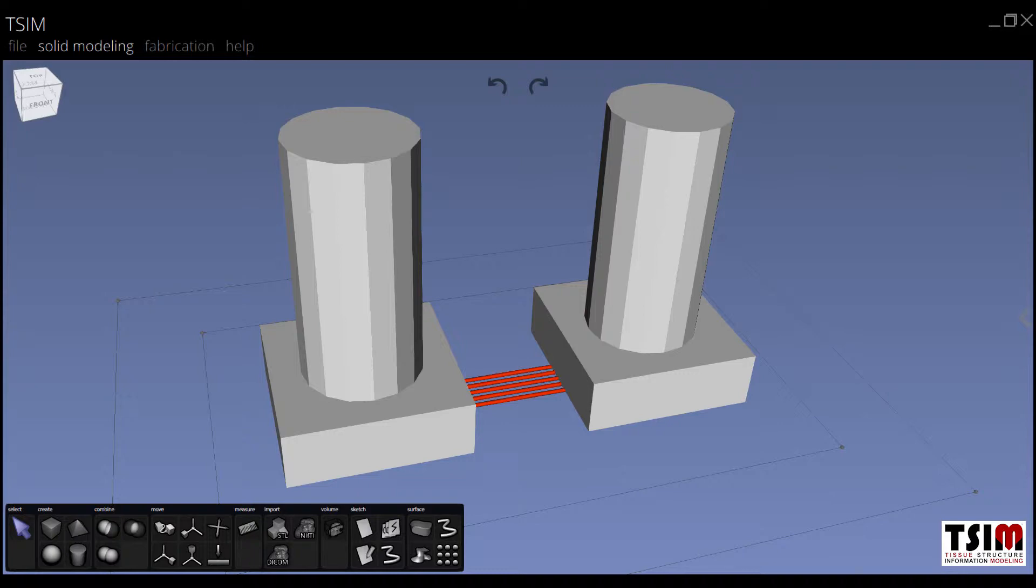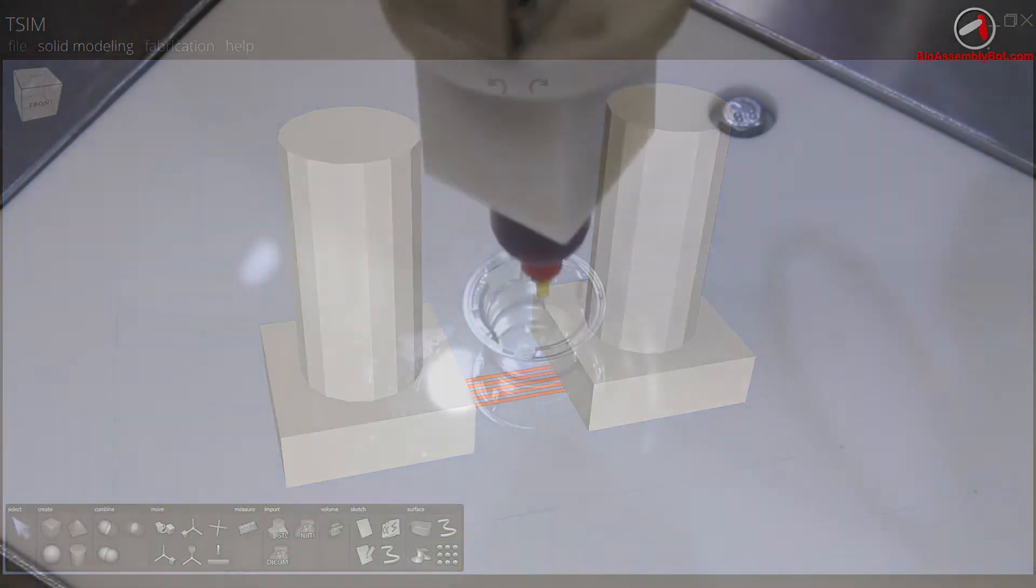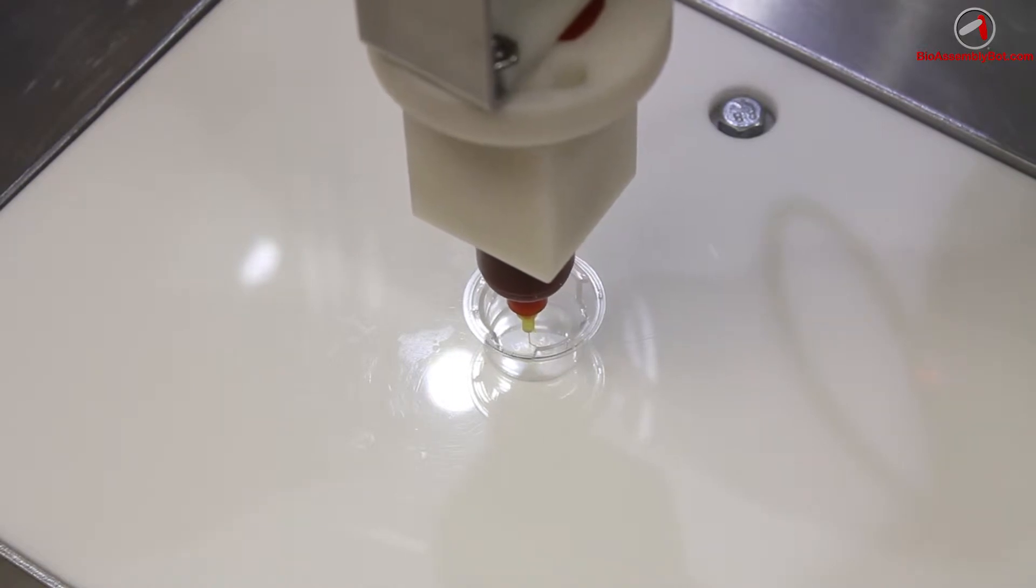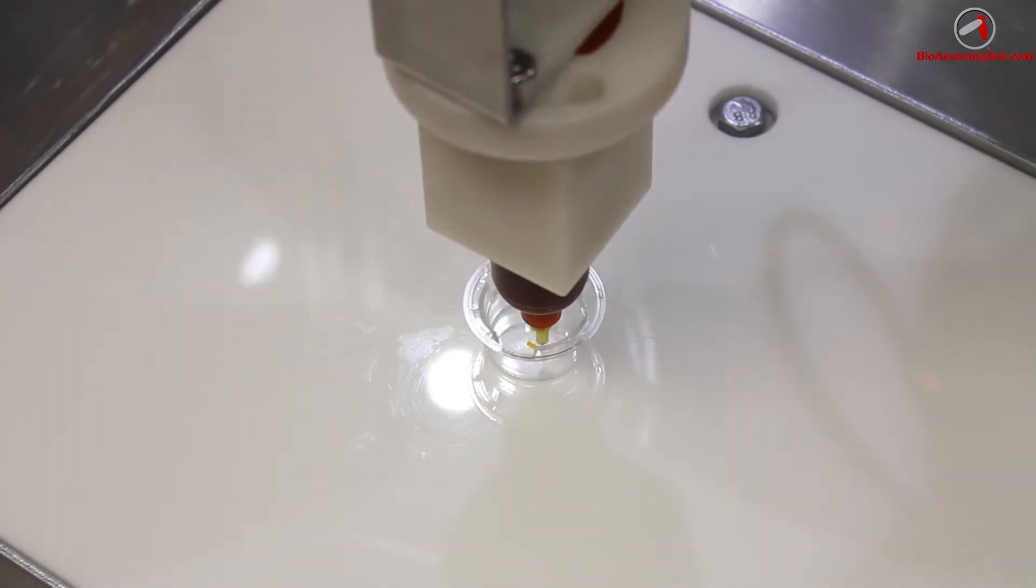In TSIM, once it's finished, the construct is sent to the VAB bioprinter, which is first instructed to print the five parallel microfluidic channels of sacrificial material. In this case, pleuronic hydrogel.